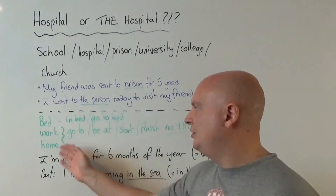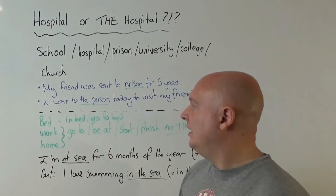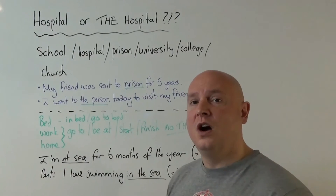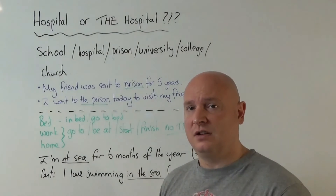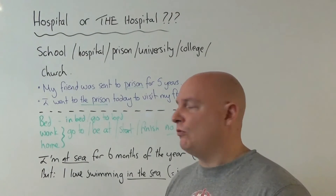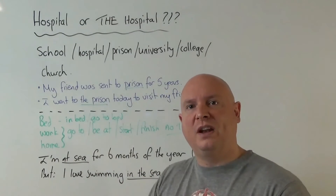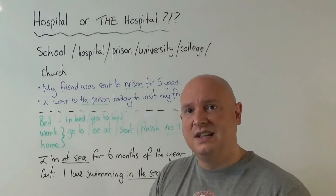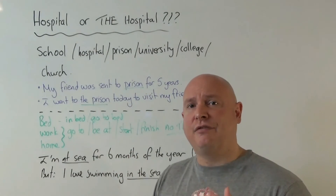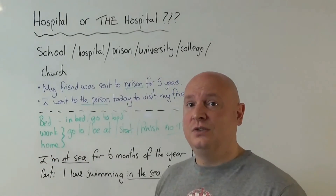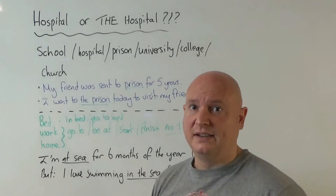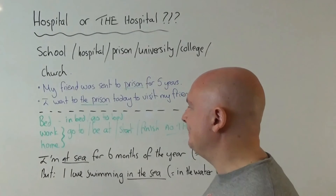Avoid using the article with work. You can use it if you say 'the work I had to do today was really difficult,' but then we're not really talking about your job — we're talking about the tasks. So with the article, the meaning is a bit different, and 'the work I had to do today' is actually an example of the definite article being used. I'll explain that later.